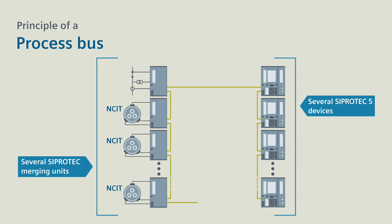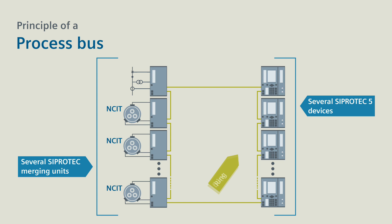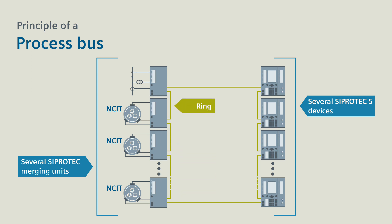For more transmission reliability, all known bus redundancy concepts can be applied with the process bus, such as operating as a ring shown here.